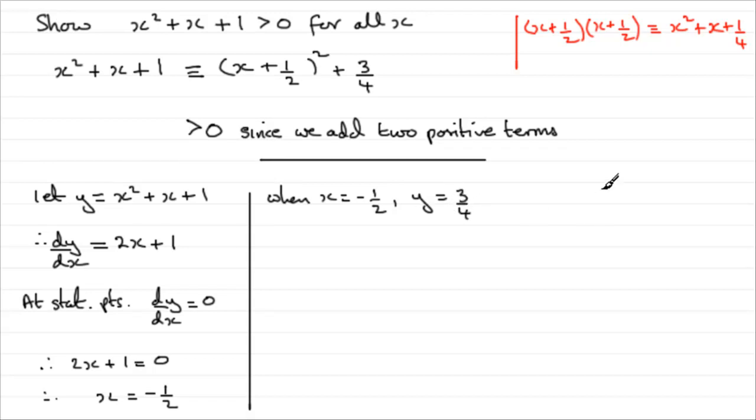But the problem is, we've got a graph here of our quadratic. Let's just draw it in here. There's a stationary point at minus 1 half, 3 quarters. So if we go minus 1 half, 3 quarters, we've got a stationary point here, say.